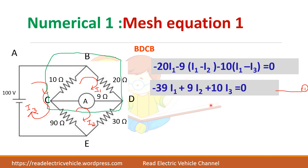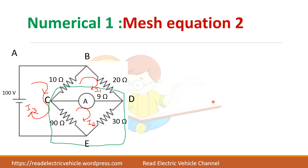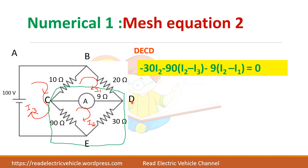Similarly, write the second equation. Take the second loop D-E-C-D, starting from point D. The current in this branch is I2, so write minus 30·I2, minus 90·(I2 minus I3), and minus 9·(I2 minus I1) equals 0.